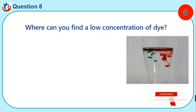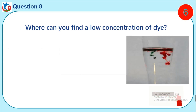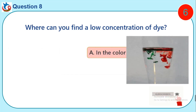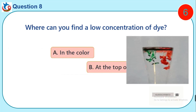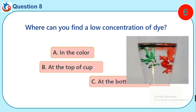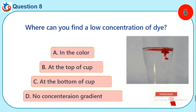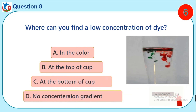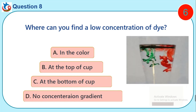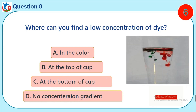Question 8. Where can you find a low concentration of dye? A. In the color. B. At the top of the cap. C. At the bottom of the cap. D. No concentration gradient.